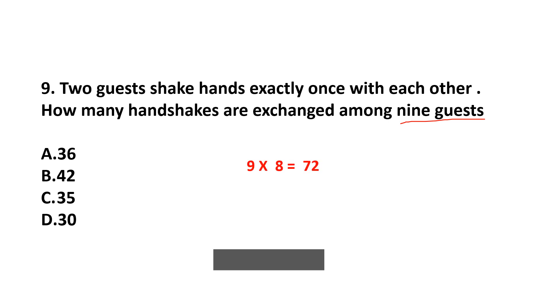9 multiplied by 8, that is 72. But, in question, it is given that 2 shake hands exactly once. So total shakes are 72 divided by 2 is 36. Answer is option A, 36.